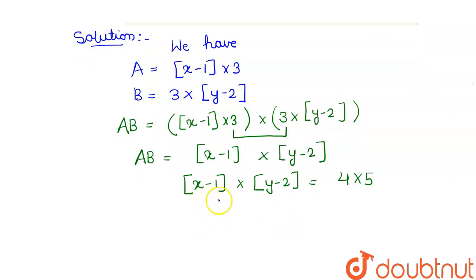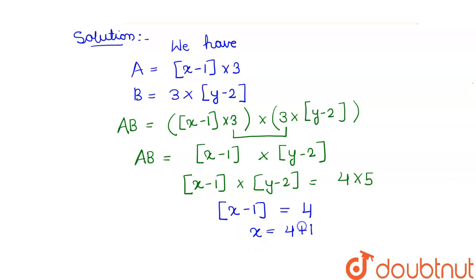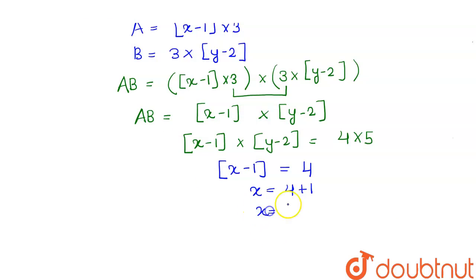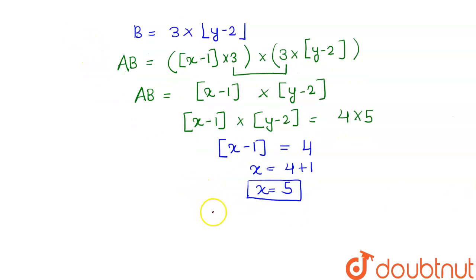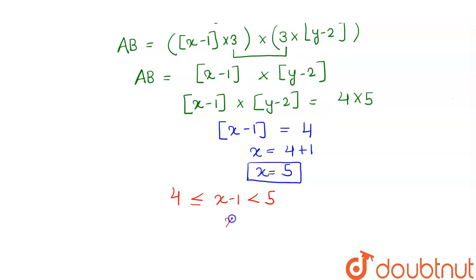Comparing this, [x-1] equals to 4, which means x equals to 4 plus 1, so x equals to 5. Therefore, 4 ≤ [x-1] < 5. When we add plus 1, we get 5 ≤ x < 6.